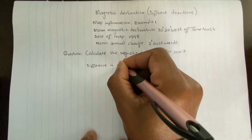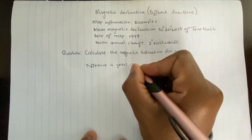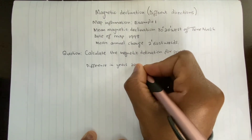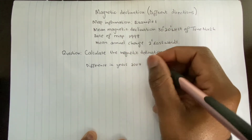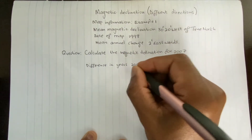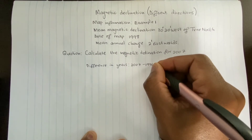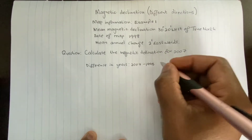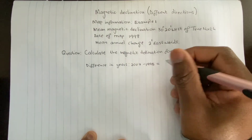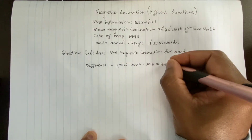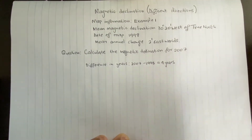For the difference in years: the target year is 2007 and the date of the map is 1998, so 2007 minus 1998 equals 9 years.